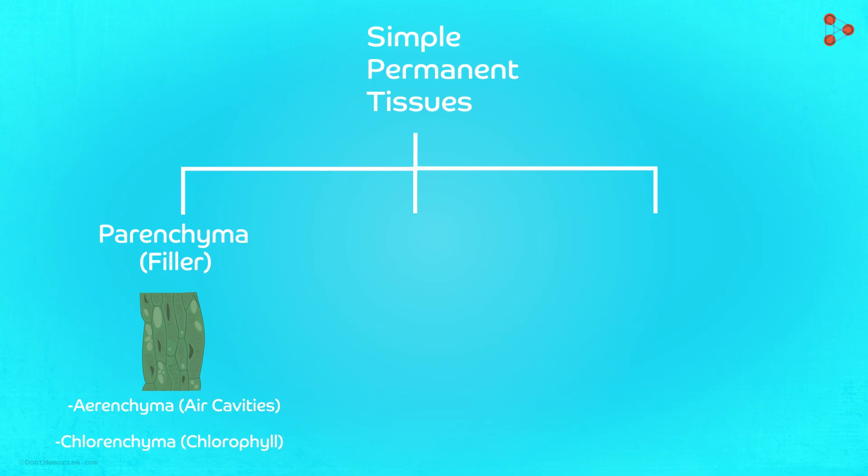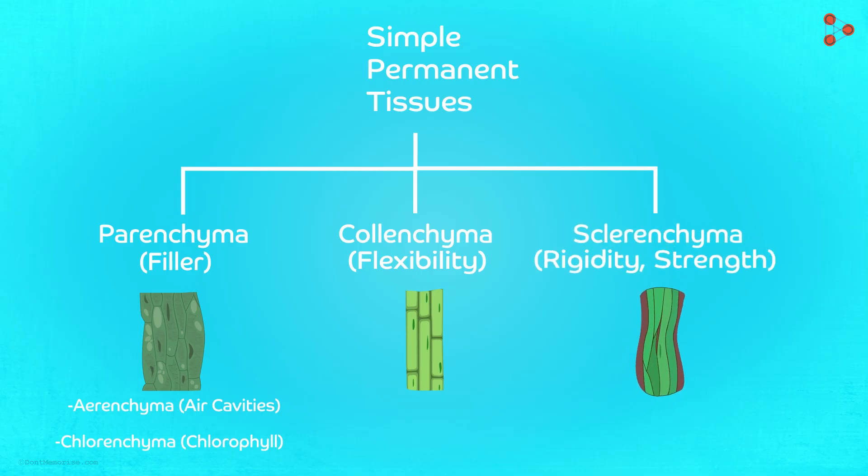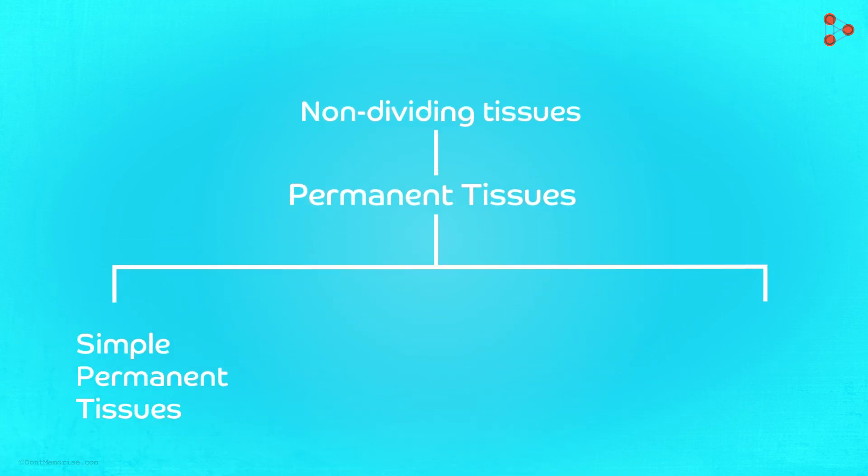Next in the list is the collenchyma which works to give flexibility to the plant. And lastly, we have the sclerenchyma that functions to give rigidity and strength to the plant. After these simple tissues, we move on to the complex tissues.